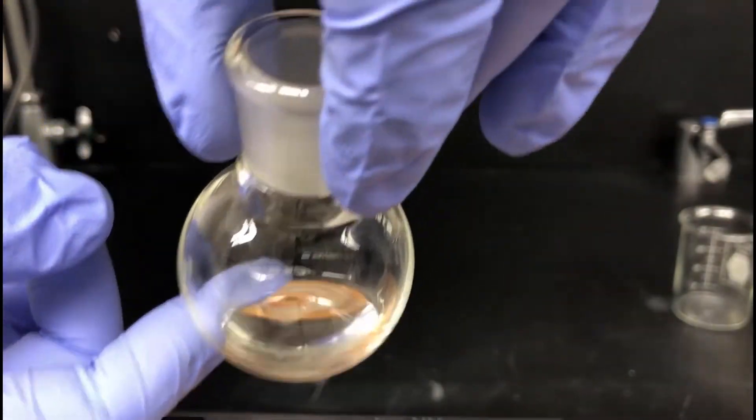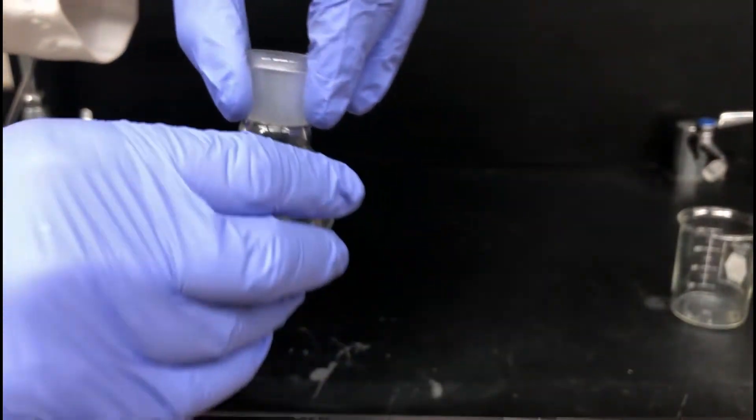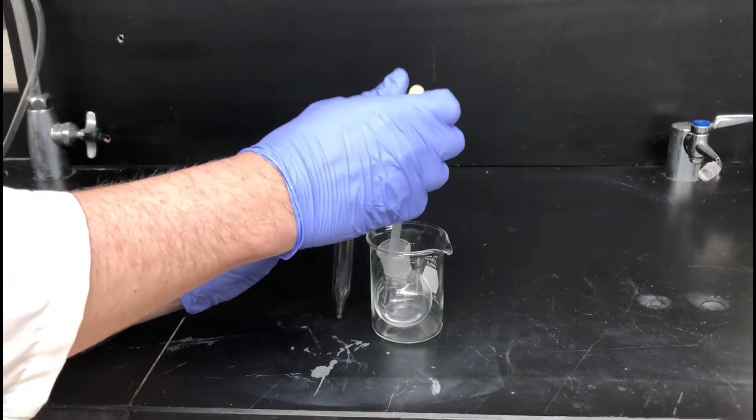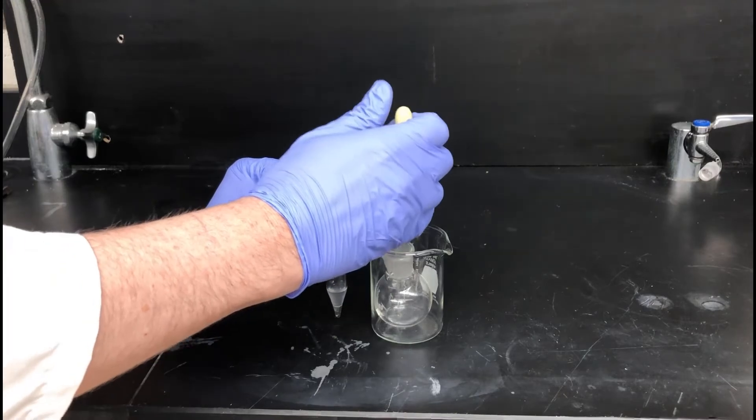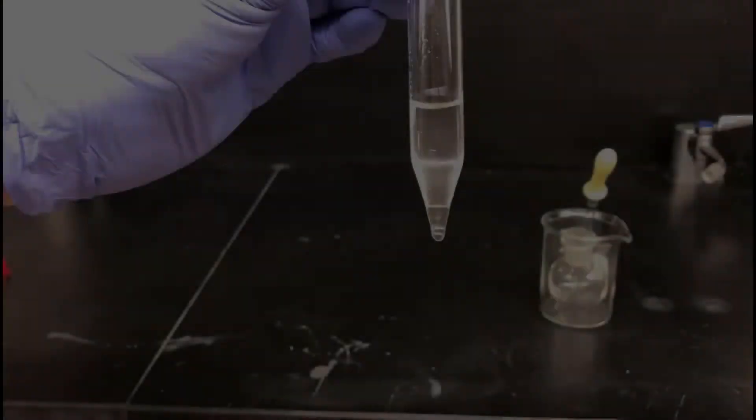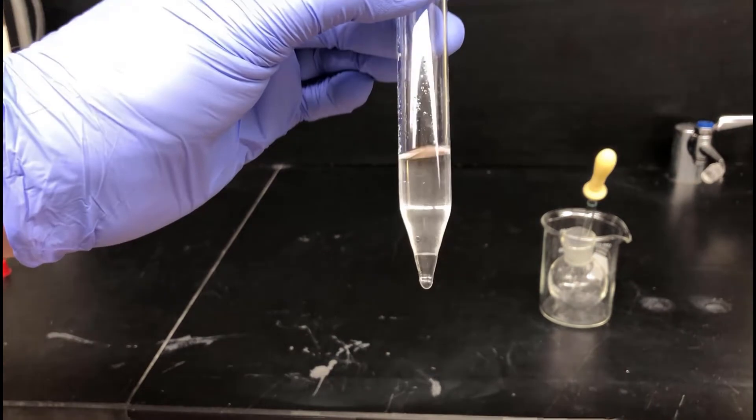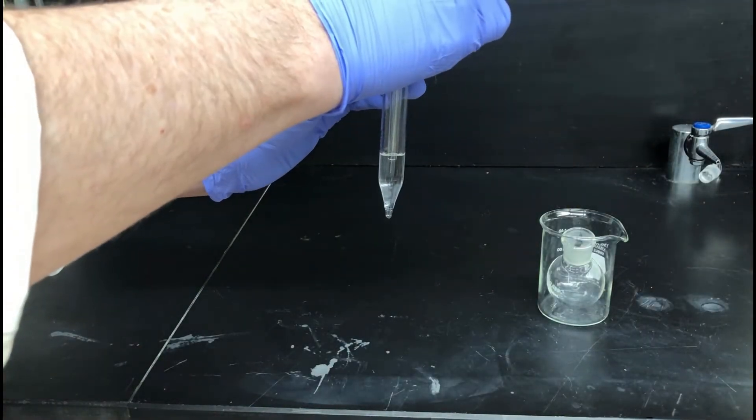The distillate contains alkene products, but it also contains water and some significant amounts of acid. Transfer the distillate into a point-bottom test tube. You might notice two phases in the point-bottom test tube. Water is more dense than the alkene products, so water is going to be on the bottom. Pipet out the lower aqueous phase and discard it.